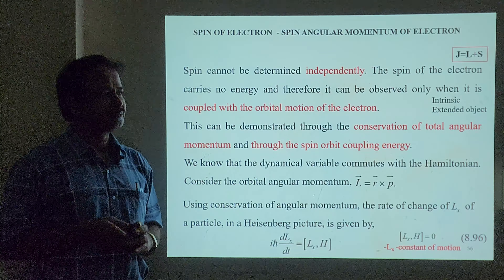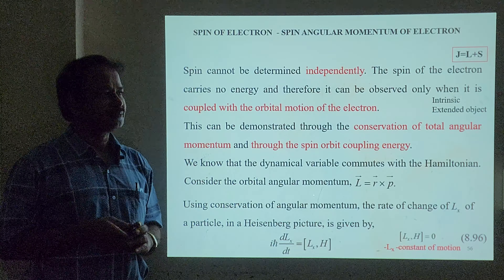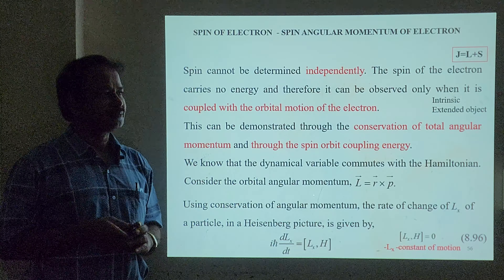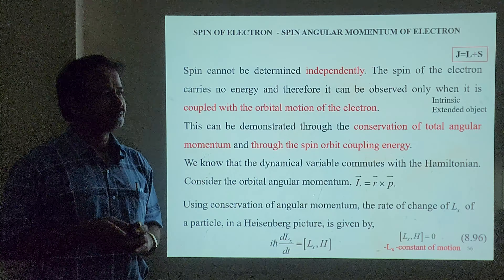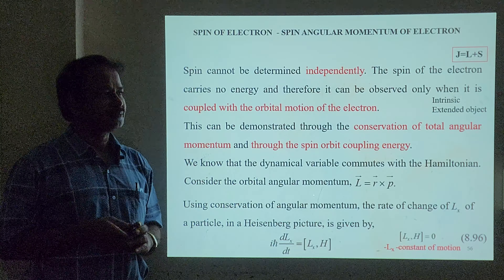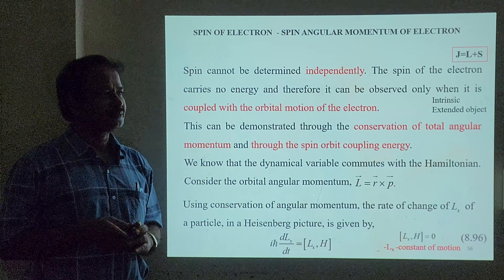If the commutator [Lx, H] = 0, then iℏ dLx/dt = 0, which implies Lx is a constant — a constant of motion, meaning energy is conserved. We are going to use the Dirac Hamiltonian and substitute it here to get the value. If it equals zero, we can say Lx commutes with H and is a constant of motion.